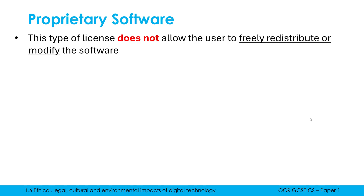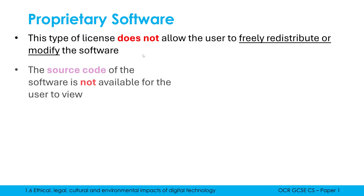A proprietary license does not allow the user to freely redistribute or modify the software. 'Freely' means for free — so if you were to modify or redistribute it, you'd have to pay quite a lot of money to the developer. Redistribute means giving it to somebody else, and modifying means changing the software. This is a very restrictive license: you're not allowed to give it to anybody else, not allowed to change it — you are given it as it is.